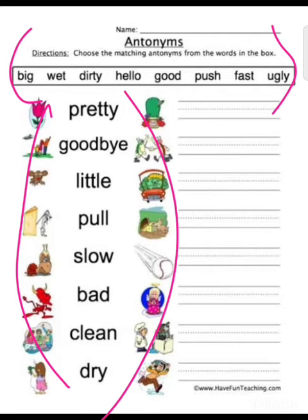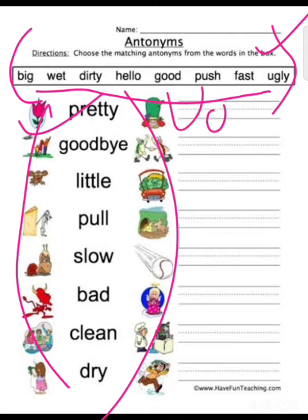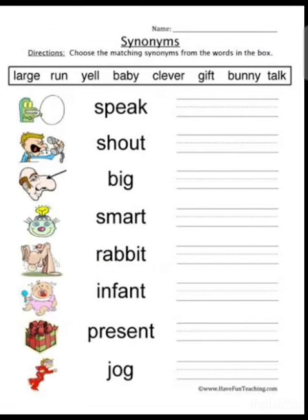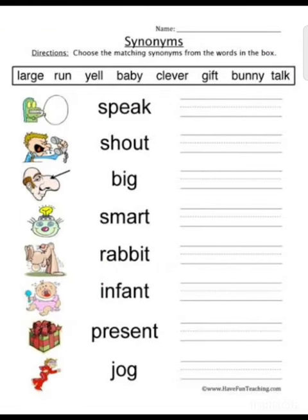Then you will write it — then you will know. For example, the word 'pretty' — its opposite is 'ugly'. So pretty means ugly. Do it this way. I will write it. We will also cover synonyms — synonyms means words with similar meanings.